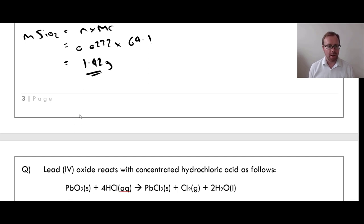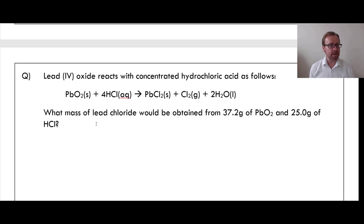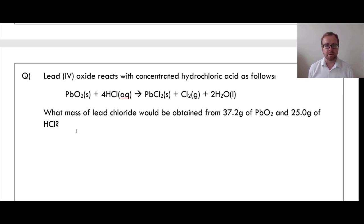Question for you: lead oxide reacts with concentrated hydrochloric acid as shown. What mass of lead chloride would be obtained from 37.2 grams of lead oxide and 25 grams of HCl? Have a go and see how you get on.